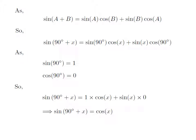So, sine of 90 degree plus x is equal to cosine of x plus 0, which is equal to cosine of x.